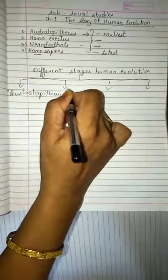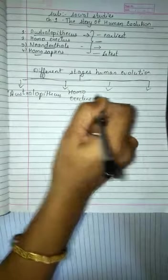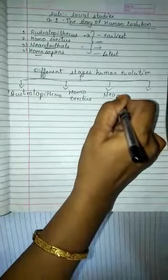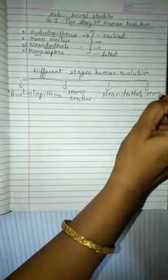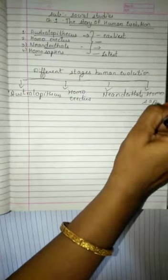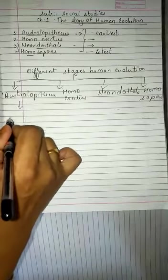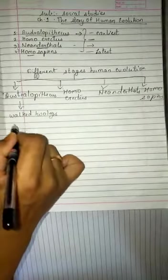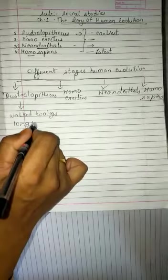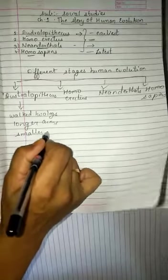Australopithecus, Homo erectus, Neanderthals, and Homo sapiens. The first one walked on two legs, had longer arms and smaller brains.